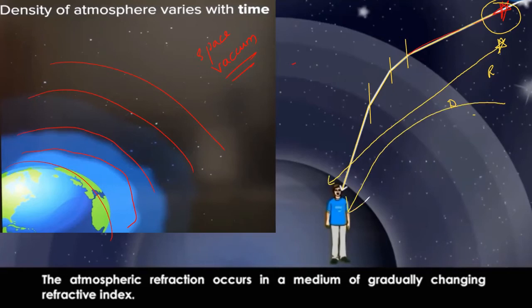For example, this is a star - light from star does not reach us like this, it always bends and reaches us. Why? Because we have this atmosphere with different layers above the Earth which have different densities. Because of the change in densities, there is atmospheric refraction, there is refraction of light rays. So light bends towards normal. This is called as atmospheric refraction. It occurs in a medium of gradually changing refractive index. The density of the atmosphere varies with time. This is what is known as atmospheric refraction.